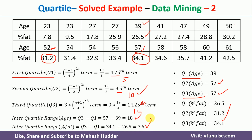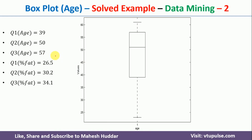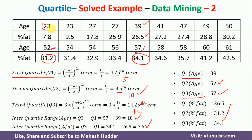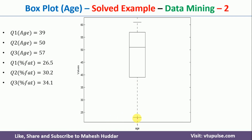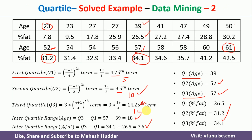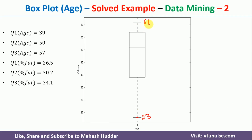Coming to the last part — how to draw the box plot. For age, the minimum value is 23 and the maximum value is 61, forming the outer boundaries. The lower part of the box is Q1, which is 39, and the upper part is Q3, which is 57. The middle line indicates Q2, which is 50. This is how you draw the box plot for age.